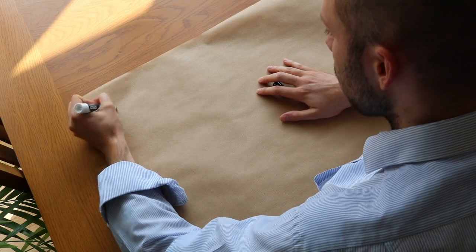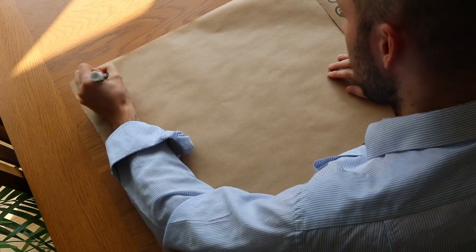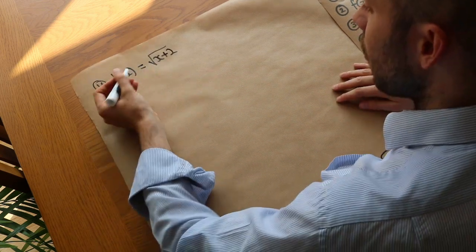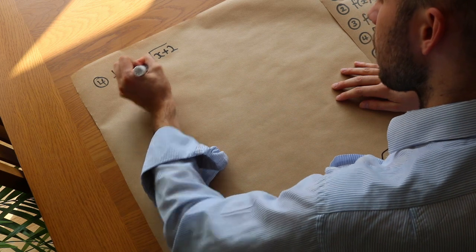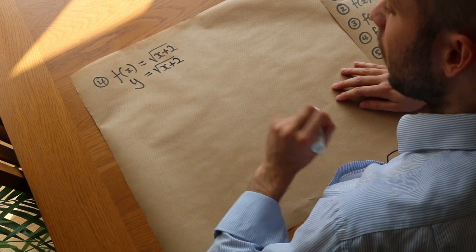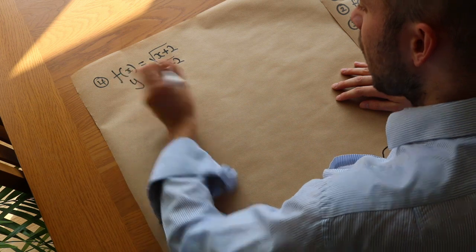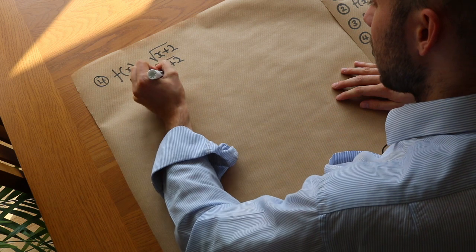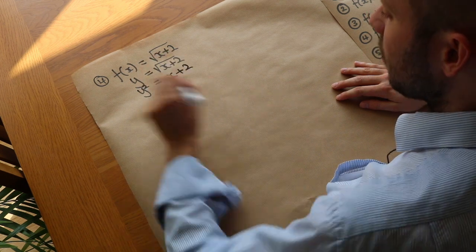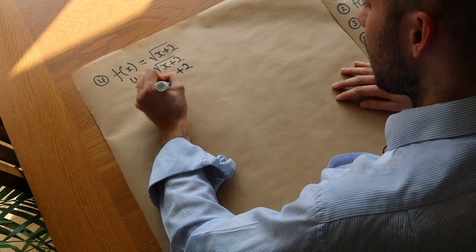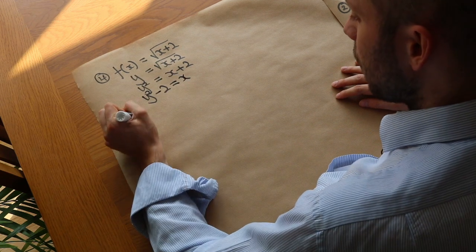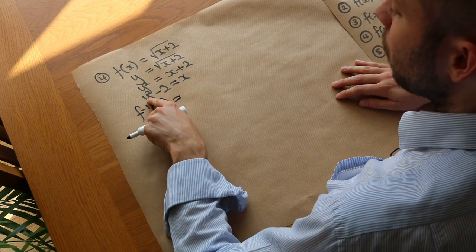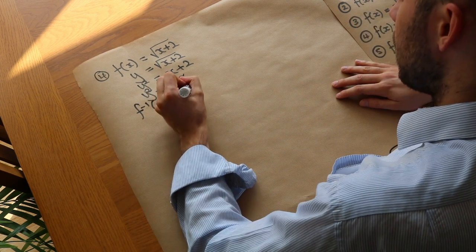Question 4: f(x) = √(x + 2). As before, we turn f(x) into y. Then we make x the subject — square both sides to get rid of the square root, giving y² = x + 2. Then subtract 2, and we've made x the subject. The last step is to use correct notation: f⁻¹(x) = x² − 2, replacing y with x.